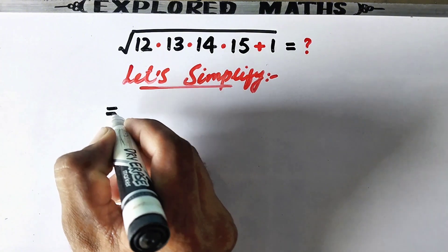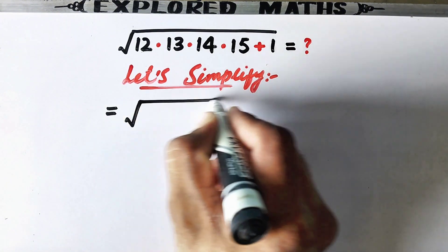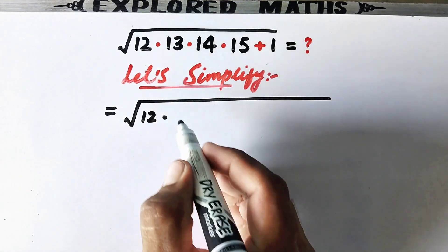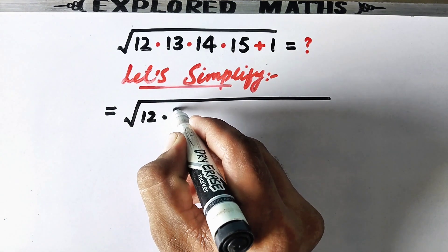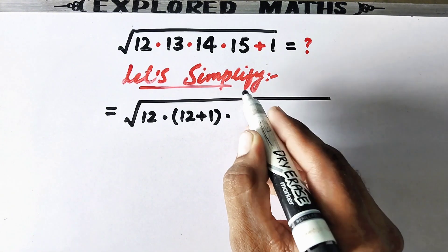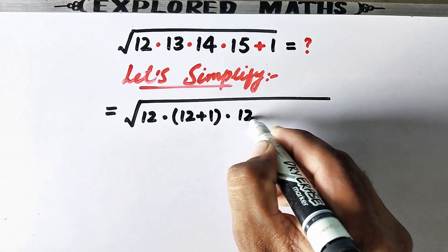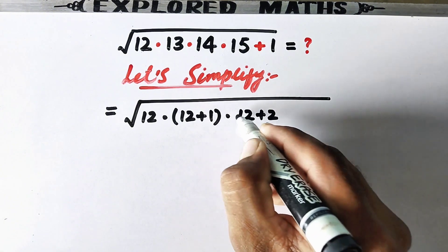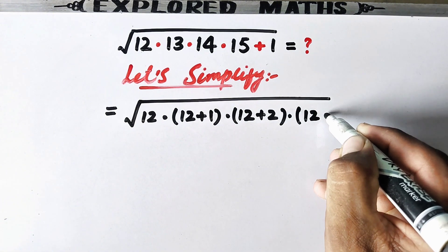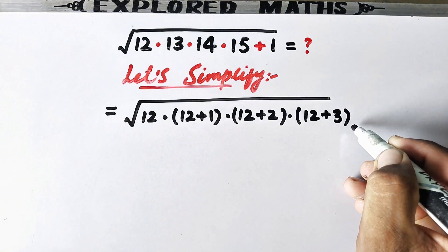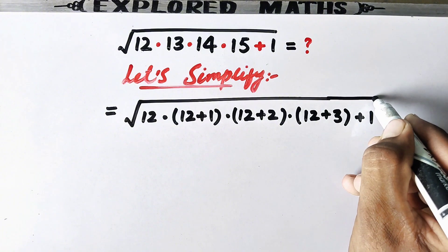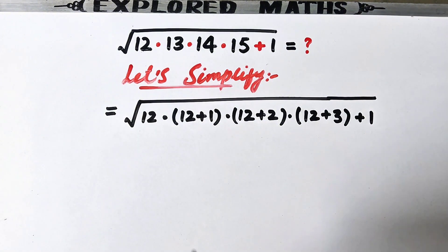In the first step we will write it equal to the square root of 12 times, and we will split 13 as 12 plus 1, times 14 which is 12 plus 2, times 15 which is 12 plus 3, and then plus this one.